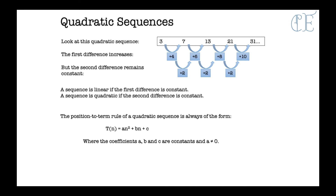The position-to-term rule of a quadratic sequence is always of the form: t(n) equals an squared plus bn plus c, where the coefficients a, b, and c are constants and a is not equal to 0. Looking at our example, the second difference is 2 — checking: from 4 to 6 is 2, 6 to 8 is 2, and 8 to 10 is 2. So the second difference is always 2.